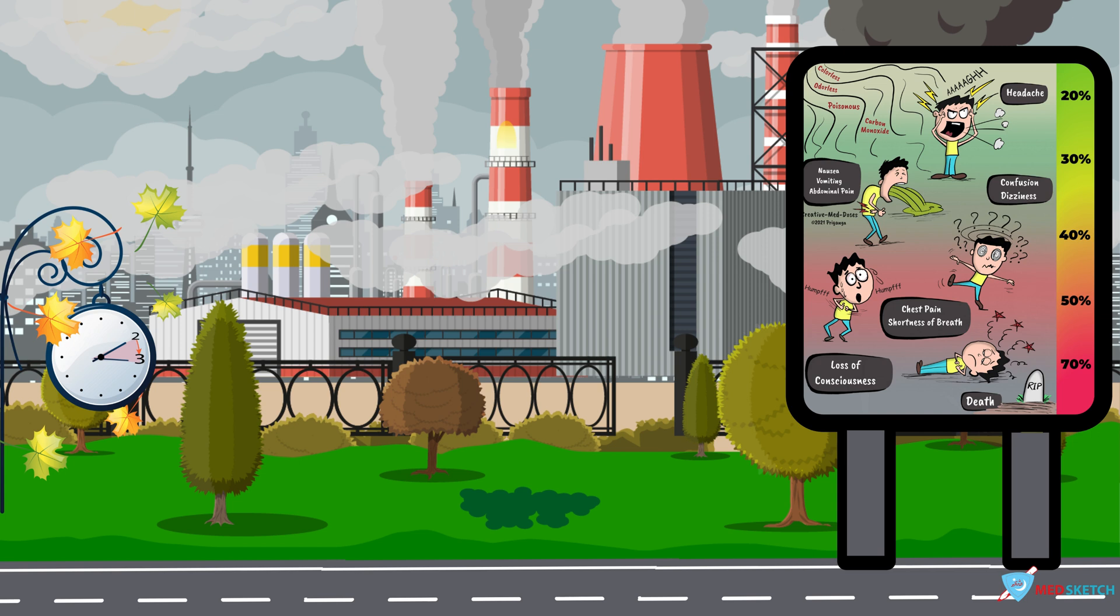At 20 to 30% or 30%, throbbing headache is present, buzzing in the ears, breathlessness, muscular weakness and incoordination. Vomiting, nausea, abdominal pain can be seen.